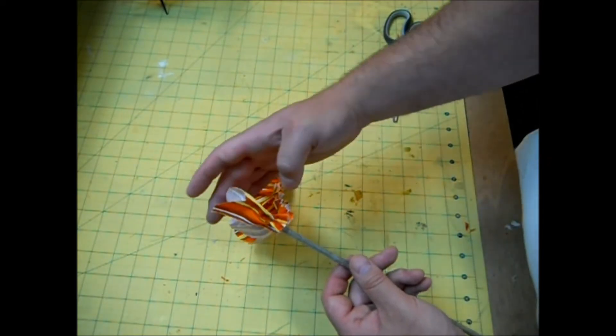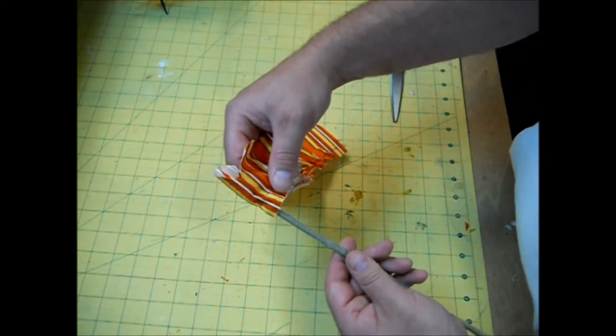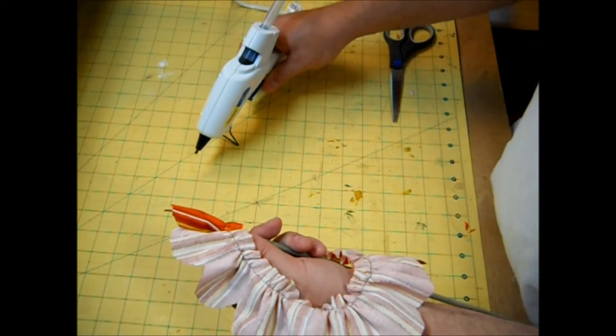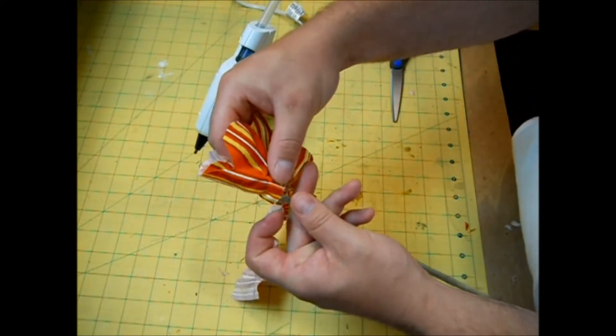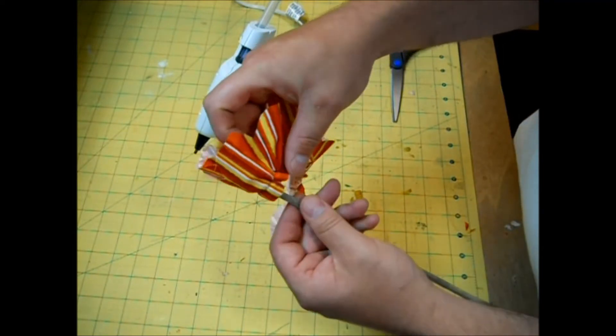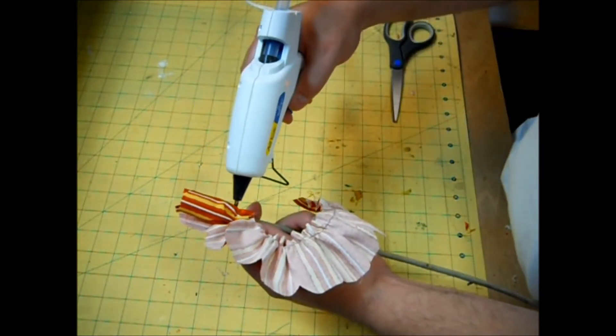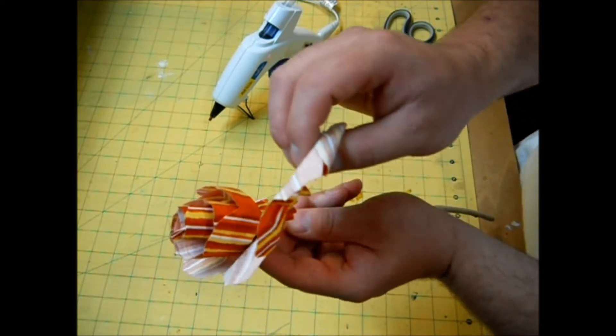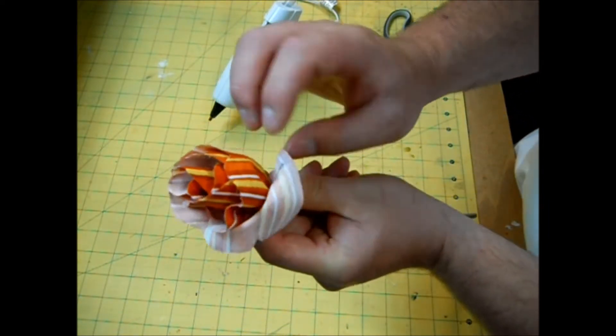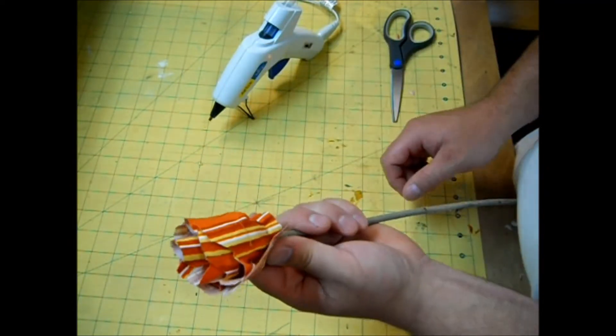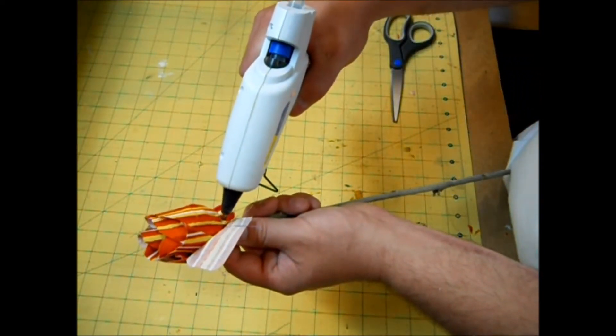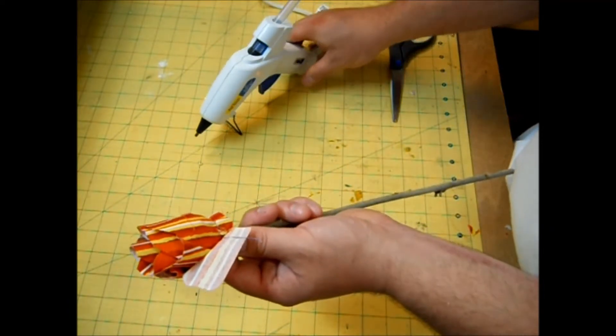So now we're just going to wrap our gathered fabric around the stick. And every so often, put a dot of glue. Now, after you do your first couple wraps, you can really see the flower shape taking form. So now I've reached my end here, so I'm just going to put a dot of glue right there and secure that into place.